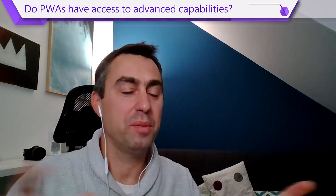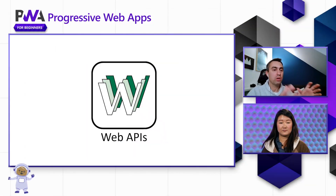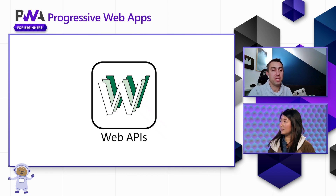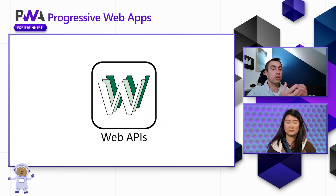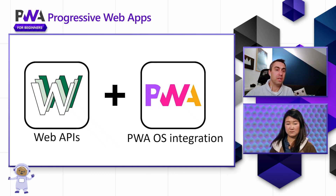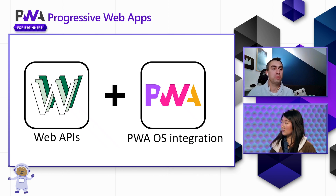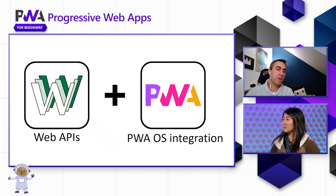I think it helps to think about them in terms of two groups. One, there's the capabilities that belong to the web group. PWAs are based on web technologies and as such they can use a ton of features that belong to the web platform — the same APIs and features that any website can use. And then the second group has features and APIs that only PWAs can use, which make your progressive web app even more advanced and integrated into the operating system.